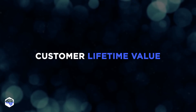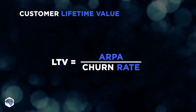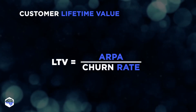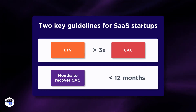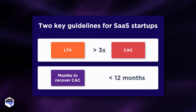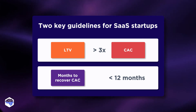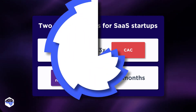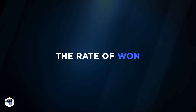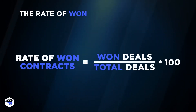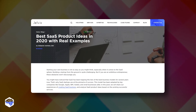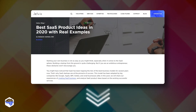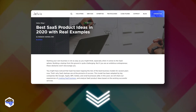Customer Lifetime Value represents the total revenue brought by customers during the whole subscription period. To understand if the business will gain money in the distant future, we need to keep the Customer Lifetime Value to Customer Acquisition Cost ratio at a level of more than 3. A simple way to check sales efficiency is to count the win rate of contracts, calculated as a share of won deals out of total deals.